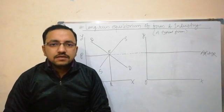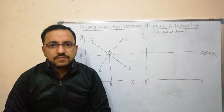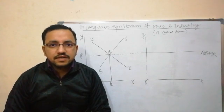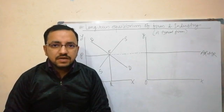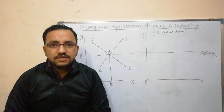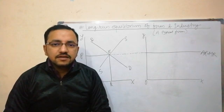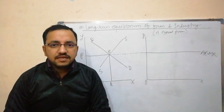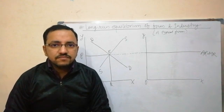In the long run, all firms are in equilibrium because they can adjust their plant size so as to produce at the minimum point of their long run average cost curve. This long run average cost curve will be tangent to the demand curve — that is, the average revenue curve — defined by the market price. Now we will study how the firm and industry reach equilibrium in the long run under perfect competition.